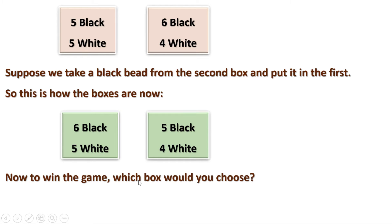Now to win the game, which box would you choose? The number of black beads in the first box is 6 and in the second box is 5. So you might choose the first box — but if you do, your chance to win is actually less. Why? Because there are a total of 11 beads in the first box, and only 6 are black. In the second box there are only 9 beads, and out of those 9, five are black.